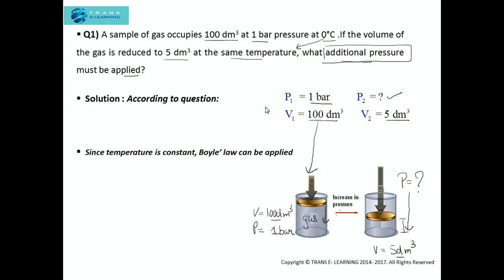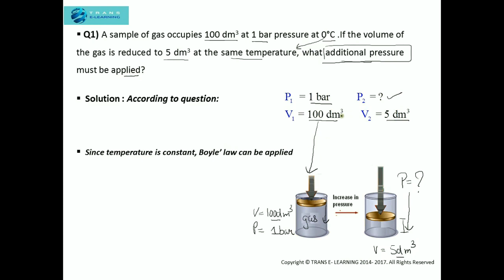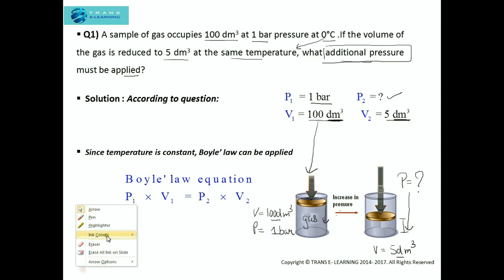Since the temperature is constant, we can apply Boyle's law and use the Boyle's law equation. But before that, we need to check whether we need to convert units or not. Volume one has the unit decimeter cube, and volume two also has the unit decimeter cube, so the units are the same — there is no need for any conversion.